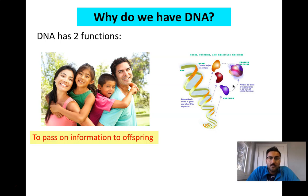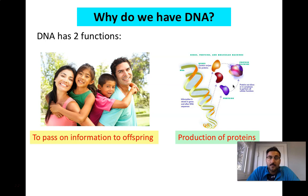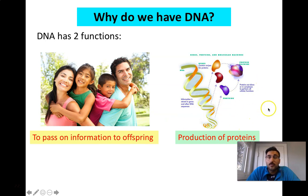DNA has two functions. The first is to pass on information to your offspring, and the second is to produce proteins. You'll pass your information on to your kids, but you will also produce proteins from that genetic information.